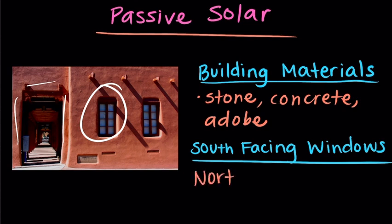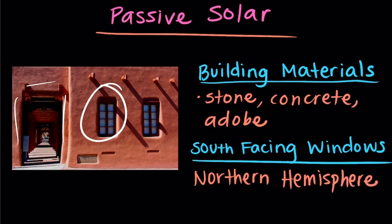Or in the Northern Hemisphere, some homes are built with south-facing windows, which increases the number of hours that sunlight comes into the home. So these are ways to passively warm a home.